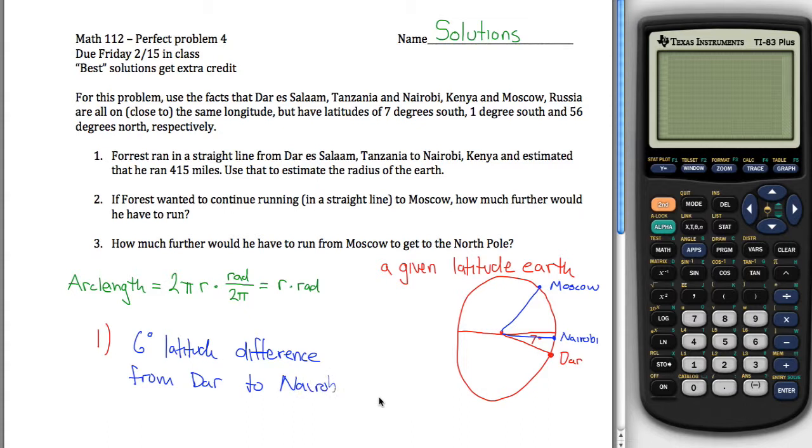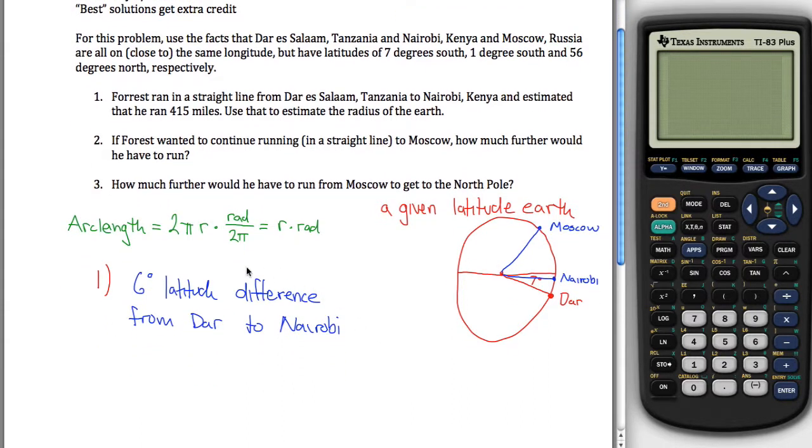So what we have is 6 degrees latitude difference from Dar to Nairobi. So we want to figure out the radius of the earth, and we have this formula that relates that. We said the arc length is equal to whatever the radius is times however many radians we have. So there's a couple problems there. Arc length we're given. He ran 415 miles.